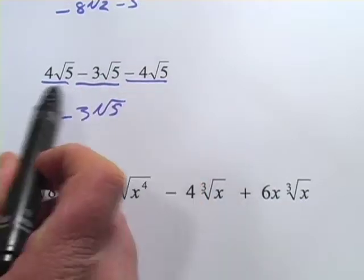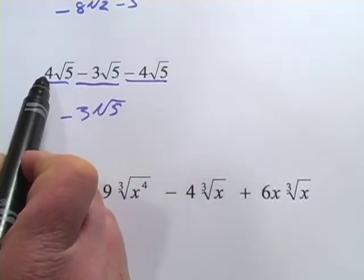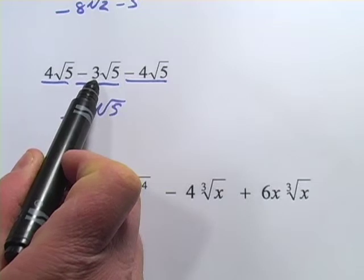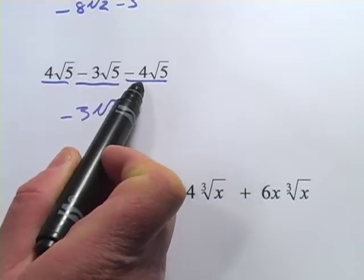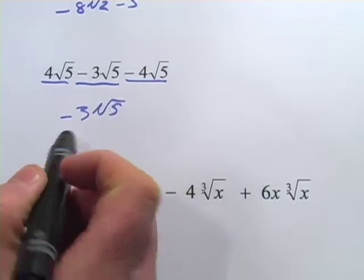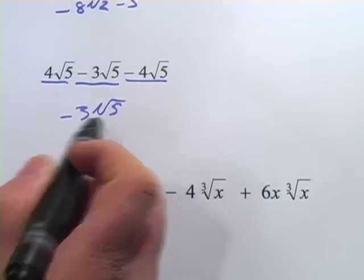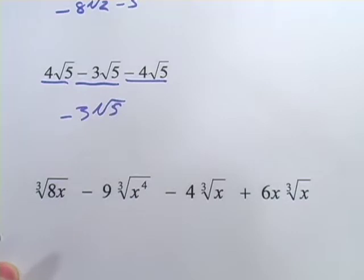However, if you were just plowing through this without looking ahead, you might say 4 times the square root of 5 minus 3 times the square root of 5 just leaves 1 square root of 5. And then I subtract 4 more square roots of 5 from that. I would get 1 minus 4 and negative 3 times the square root of 5. Either way, you arrive at the same answer.